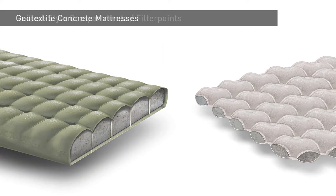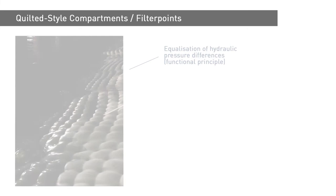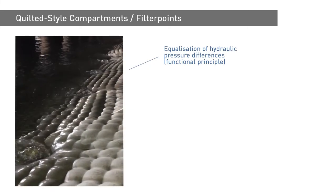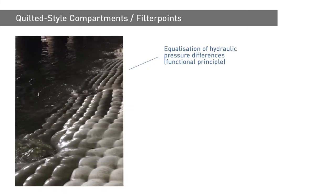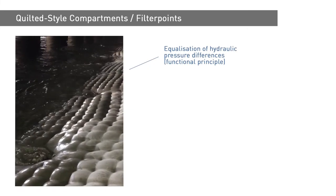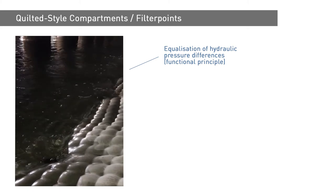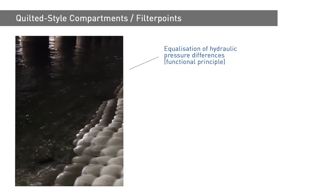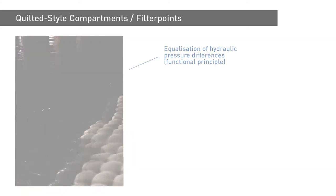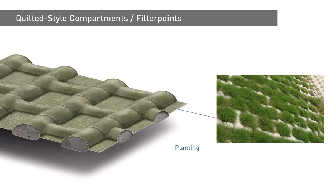Compartmentation of the mattress allows the incorporation of filter points that serve to equalise hydraulic potential differences, for example a rapid water level drop caused by wave movements. Purpose-configured mattresses with suitably dimensioned filter points can also be subsequently planted.